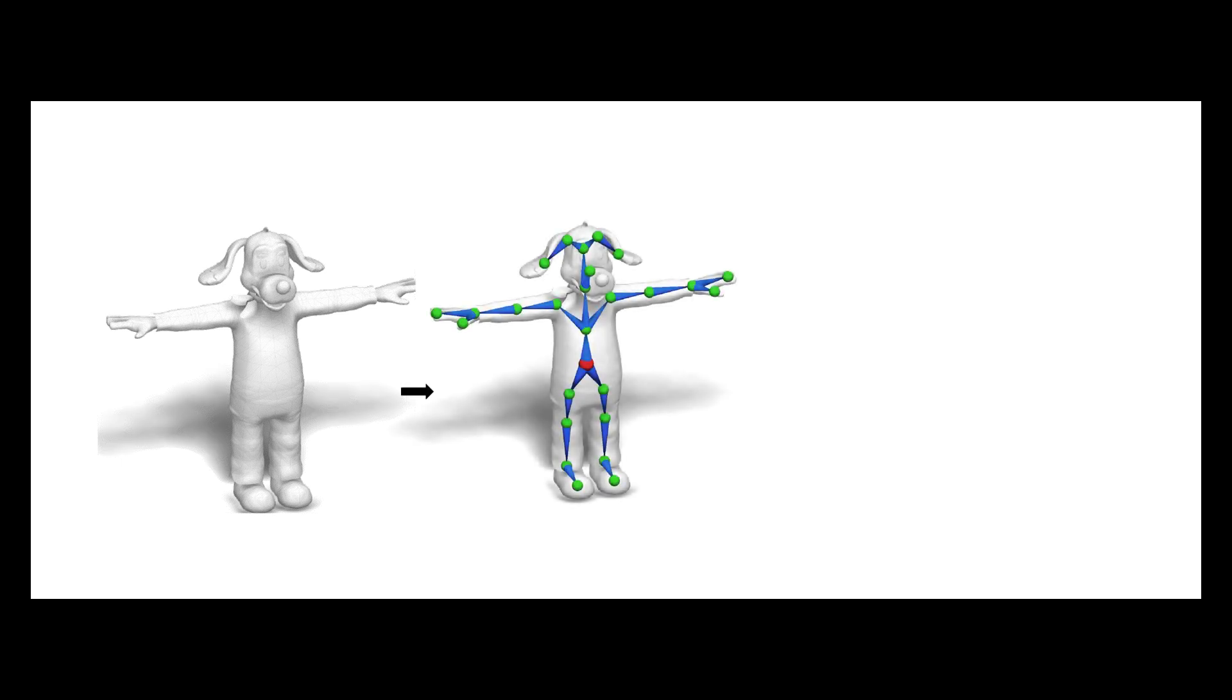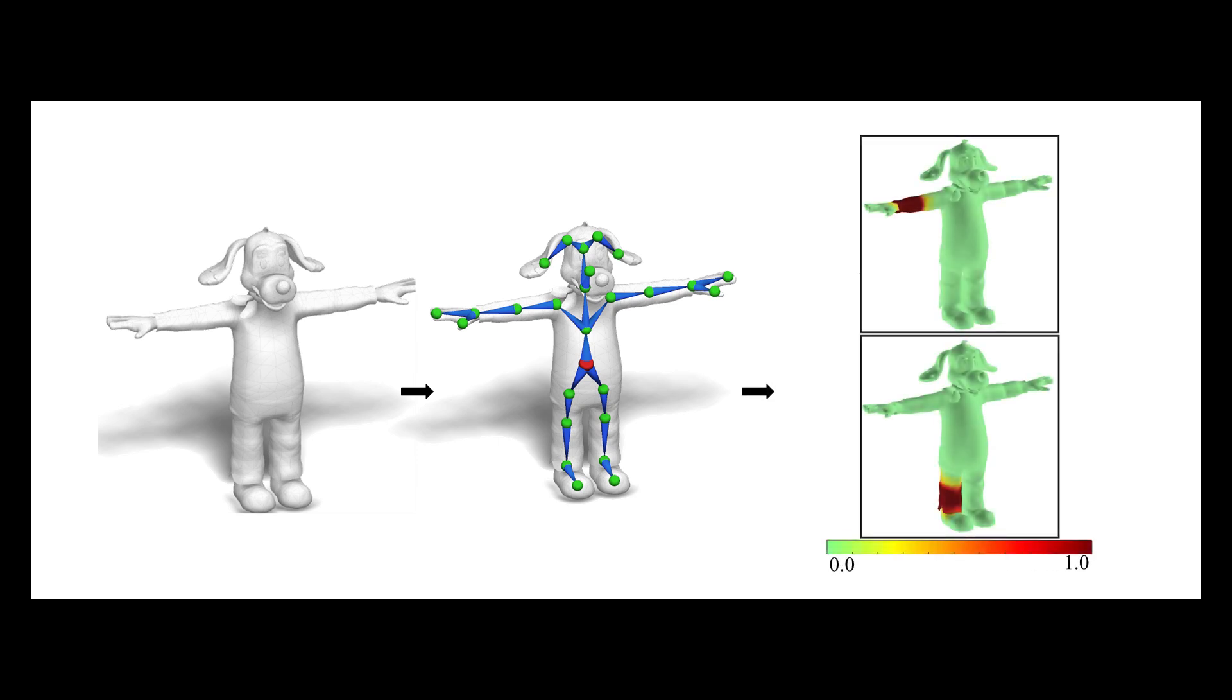Given an input 3D character mesh, RigNet first predicts and creates a skeleton that matches animator's expectations in joint placement and topology. It then predicts and applies surface skinning weights to that character mesh.